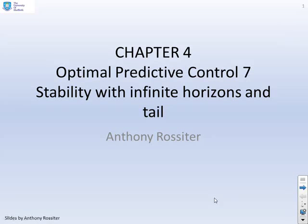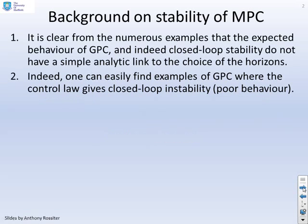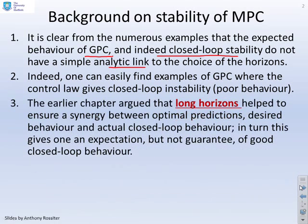This video looks at the stability of OMPC type algorithms. It's clear from numerous examples that the expected behavior of GPC and indeed closed-loop stability do not have a simple analytic link to the choice of horizons. Indeed, you could easily find examples where GPC was closed-loop unstable.